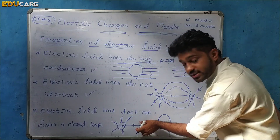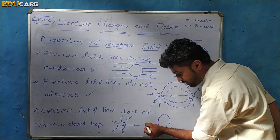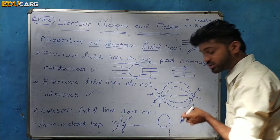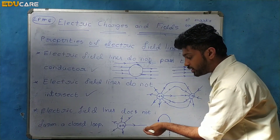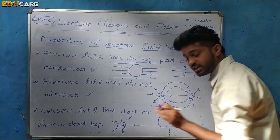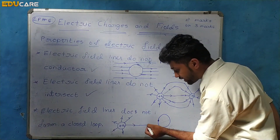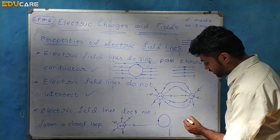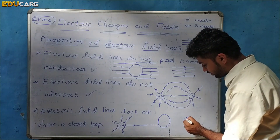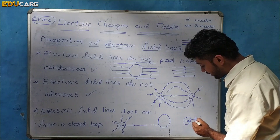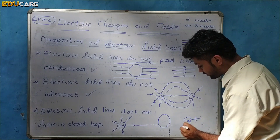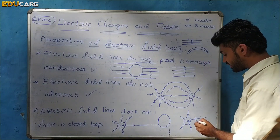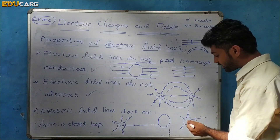If we extend the electric field lines from a positive charge, they go radially outwards and cannot loop back to form a closed loop. Similarly, for a negative charge, electric field lines are radially inwards. Since the lines either radiate outward or converge inward, they never form a closed loop — the start and end points are always distinct.